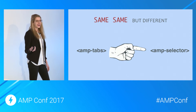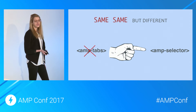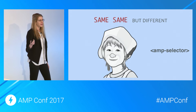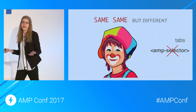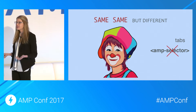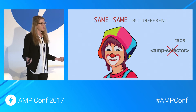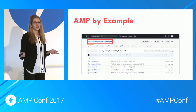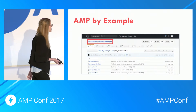However, it turns out that amp-selector is very similar. So in this use case, instead of building amp-tabs, you would take amp-selector, add some markup, and then you have amp-tabs. We encourage you to do that as well. But when you do that, please take your code and put it in AMP by Example so other developers can see how to use it and follow what you did.